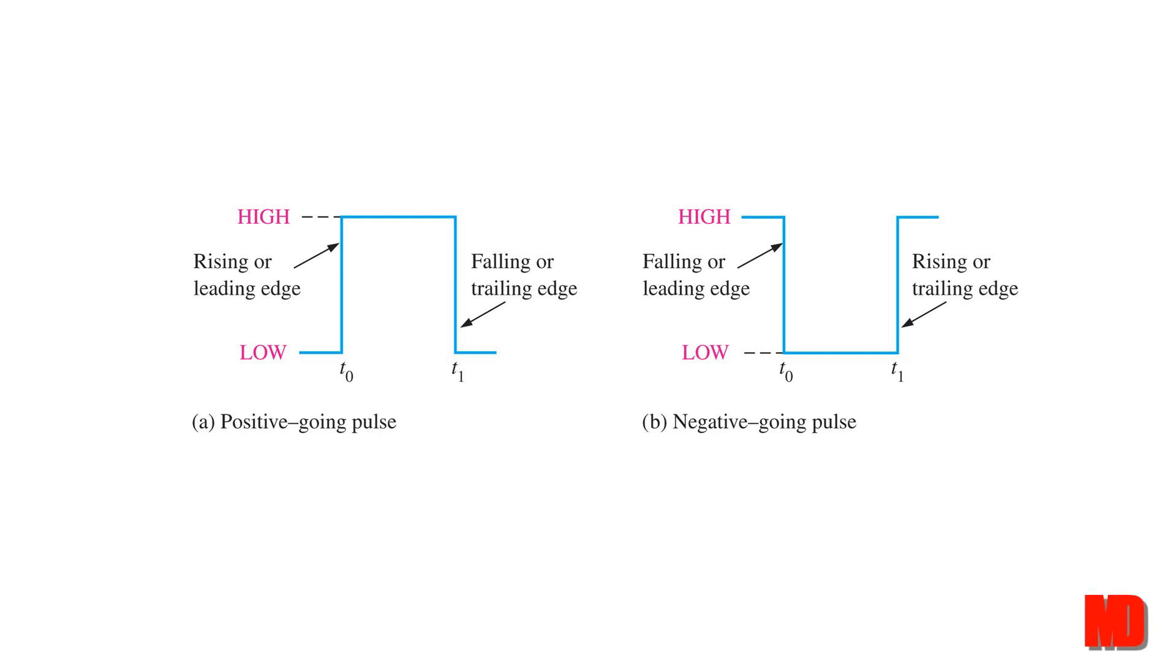The rising edge of the pulse, however, is wherever the pulse goes from low to high, and the falling edge is wherever the pulse goes from high to low.